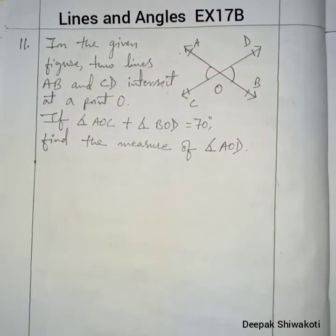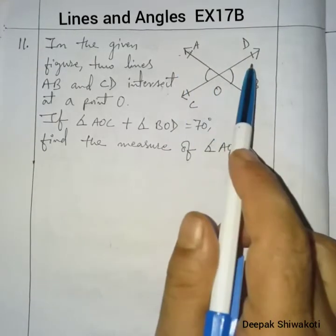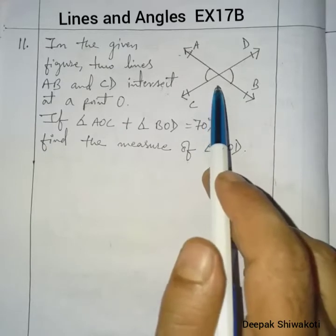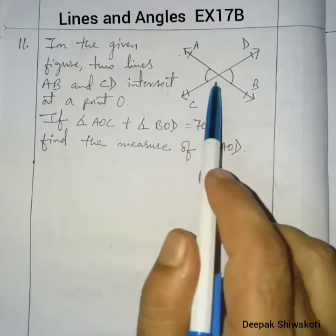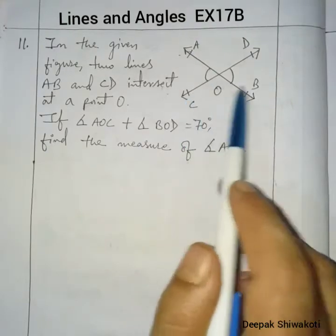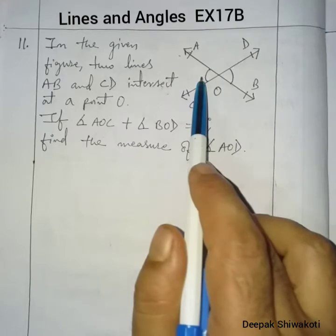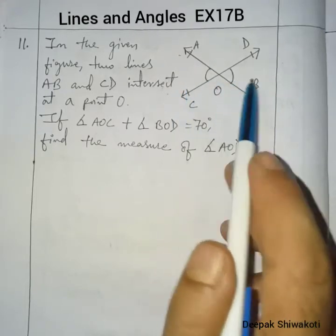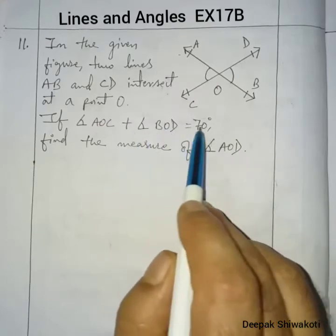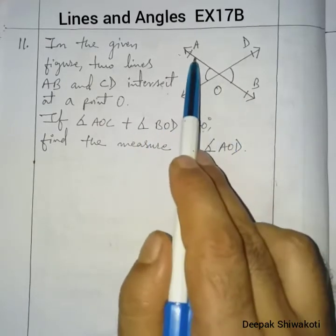In the given figure, two lines AB and CD intersect at point O. Angle AOC plus angle BOD — the sum of these two angles is equal to 70 degrees. Find the measure of angle AOD.